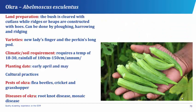The okra, which has its botanical name as Abelmoschus esculentus, is a vegetable crop commonly grown by local farmers in West Africa. The fruits, called capsules, when young are harvested with knives and used in soup preparation. In preparing the land for okra planting, the bush is cleared with cutlass while ridges or heaps are constructed with hoes. It can also be done by ploughing, harrowing, and ridging.